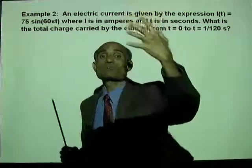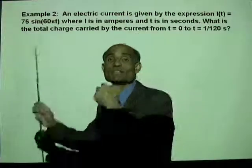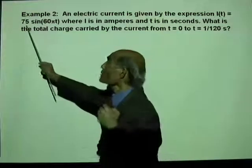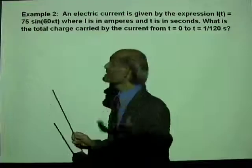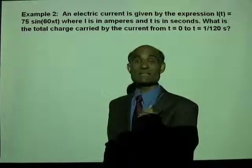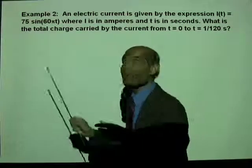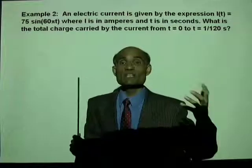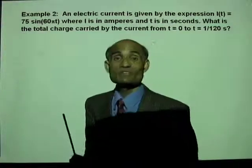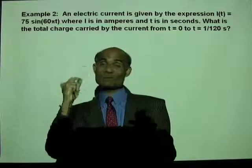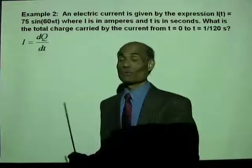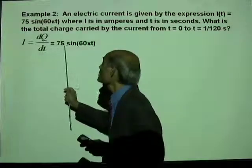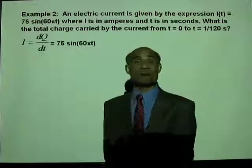In fact, this projector bulb which shines light on me and onto the board is powered by a current given by this expression: 75 sine 60 pi T. We know that I equal to DQ over DT, and that is equal to 75 sine 60 pi T.